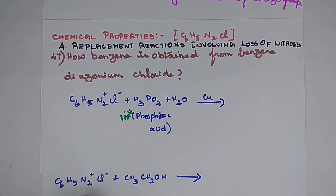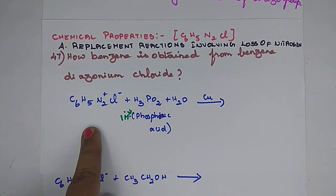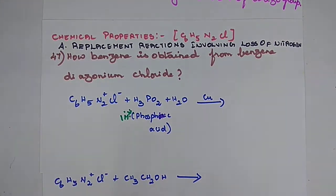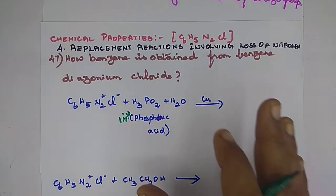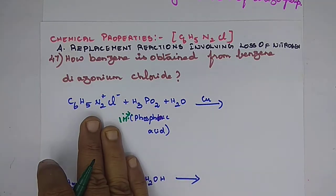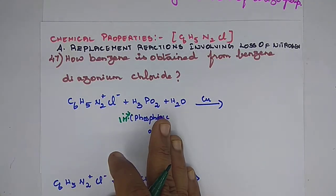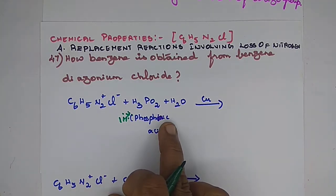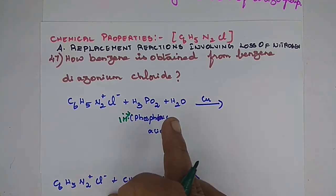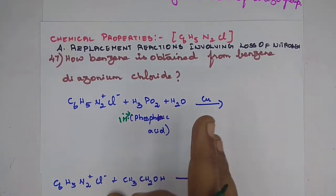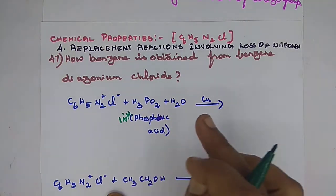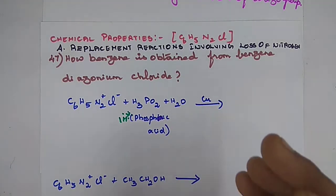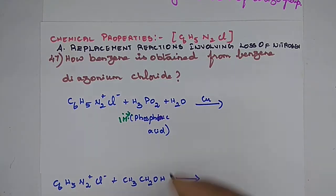With the reaction, benzene diazonium chloride is converted to benzene. This method involves cuprous ions — copper chloride — present in water.